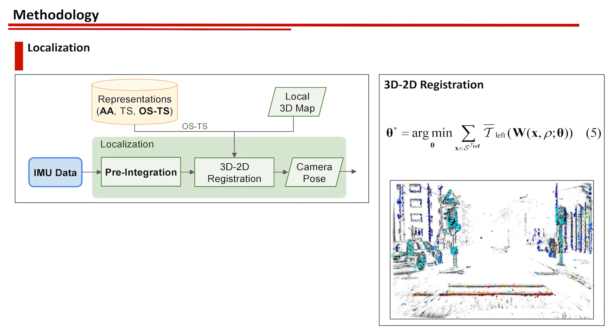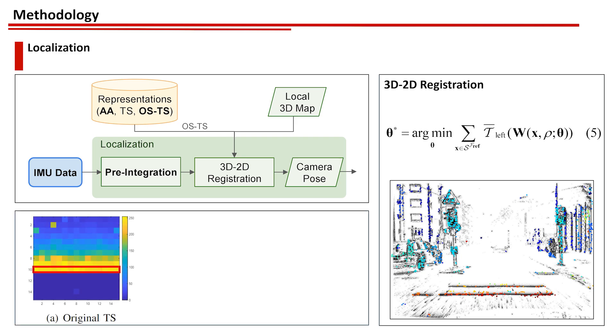Our localization module estimates the pose by solving a 3D to 2D registration problem that aligns the local map to the time surface, with IMU pre-integration providing the initial guess. Since the time surface only has gradients on one side of the edges, which is not conducive to problem solving, a blurring filter operation is applied.